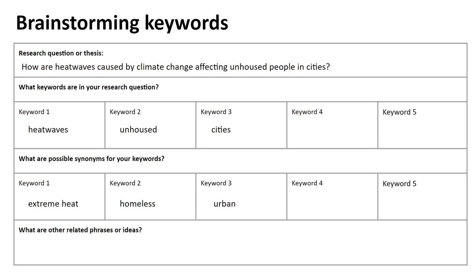We should also think of some related concepts or phrases. In the course of your searching, you might find that you have to get more general or more specific. We might think about extreme weather a little more broadly, or the impact of a heat wave in a particular geographic area. Brainstorming these synonyms and related phrases is intended to help you prepare for how you might need to adjust your searches as you go, because you will need to adjust your searches. One search will not be enough — you'll have to do many. But with some keywords ready to go, you'll be better prepared for that process.